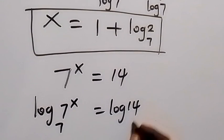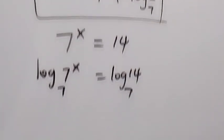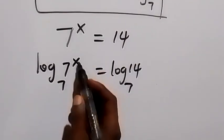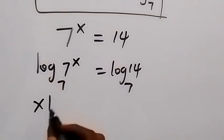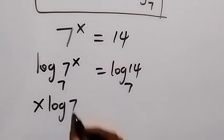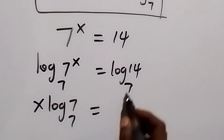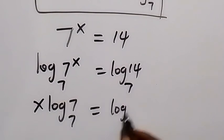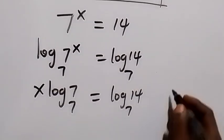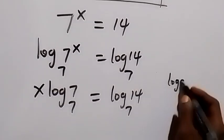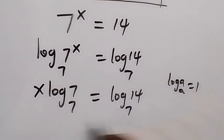We have x log base 7 of 7 equals log base 7 of 14. From log base a of a equals 1, here log base 7 of 7 is 1, so we have x times 1, that's x, equals log base 7 of 14.